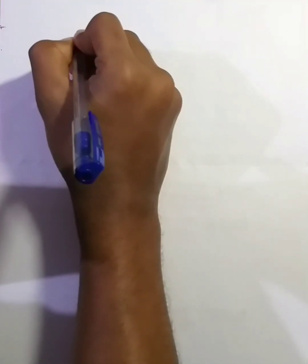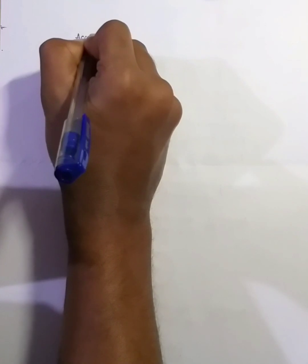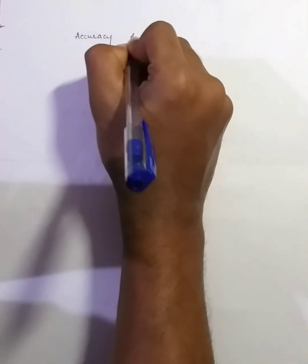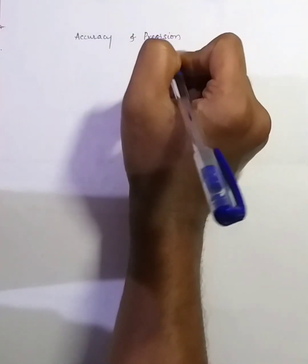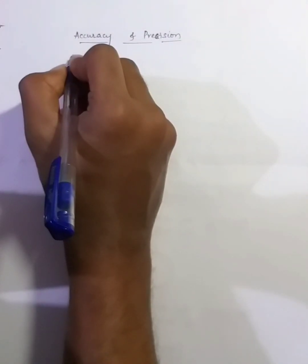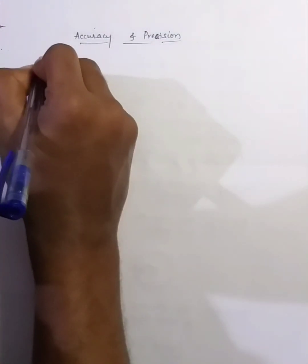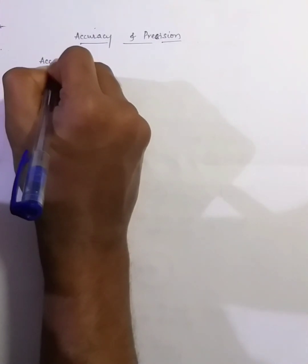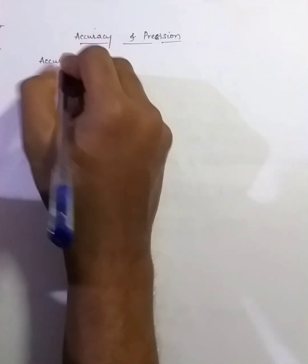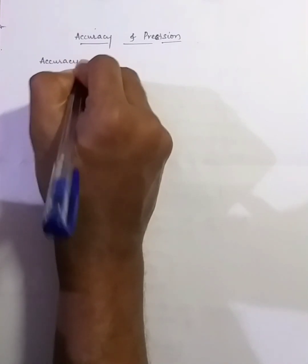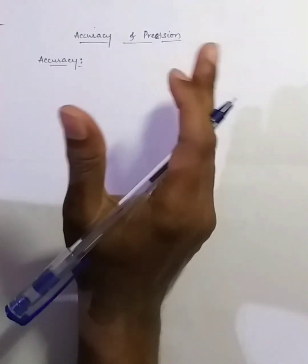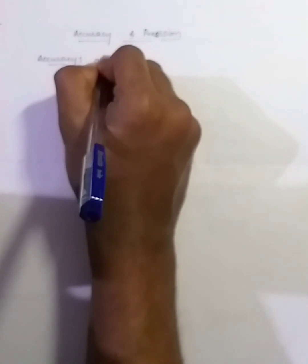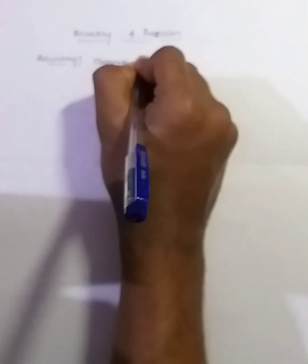Let's talk about accuracy and precision. First, I will tell the definition of accuracy and precision. Accuracy is the closeness of a measured value to the true value.